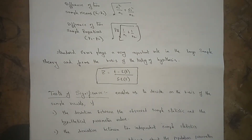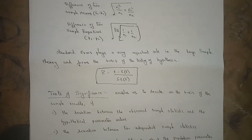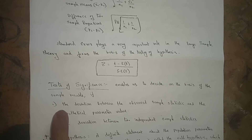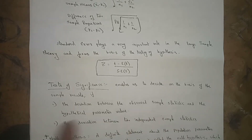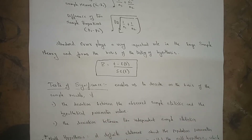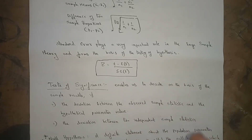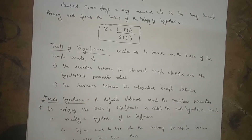Tests of significance — very, very important. The test of significance enables us to decide on the basis of sample results. The first type is the deviation between the observed sample statistic and the hypothetical parameter value. In a given problem, they will give you the hypothetical parameter value, and by doing the problem we will observe the sample statistic. The second type is the deviation between two independent sample statistics.